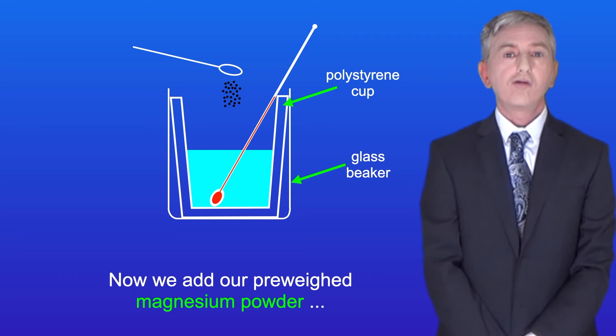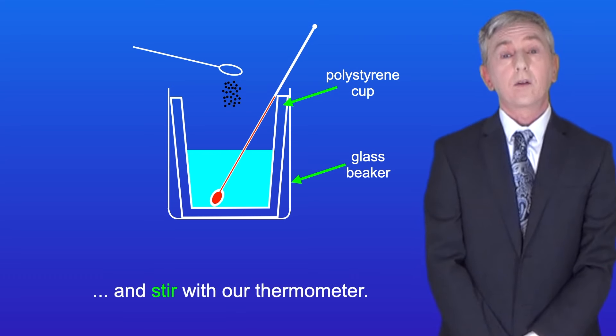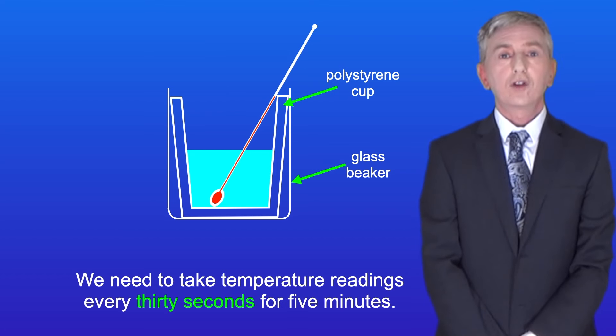Now we add our pre-weighed magnesium powder and stir with our thermometer. We need to take temperature readings every 30 seconds for 5 minutes.